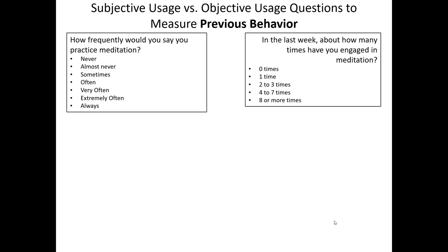On the right hand side, we're asking: 'In the last week, about how many times have you engaged in meditation?' — measuring from zero times to eight or more times. At first glance, these seem like we're asking the exact same question, but we're really not. One is subjective usage and the other is objective usage.